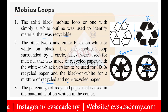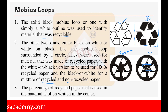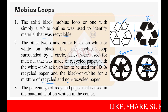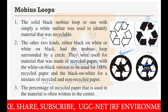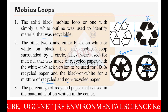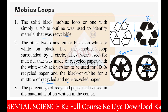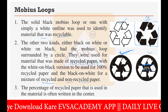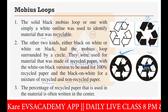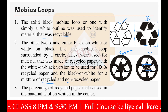So mainly you can see three types of Mobius Loops. The first type — black on white background — means the material is recyclable. The second and third types have a circle surrounding the loop: white on black shows 100% recycled paper, and black on white shows a mixture of recycled and non-recycled paper. Sometimes a percentage value is shown in the center indicating the proportion of recycled material used.